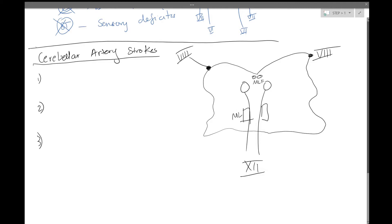This is the medial lemniscus, which is going to be proprioception. And we're also going to have our corticospinal or pyramidal tracts here.